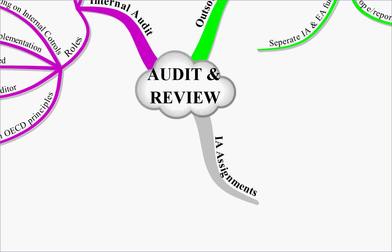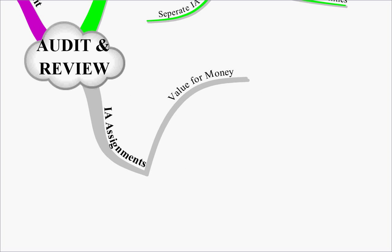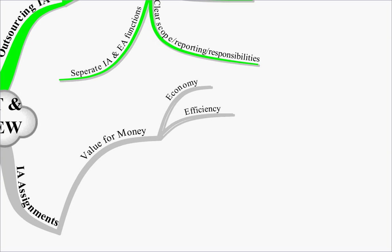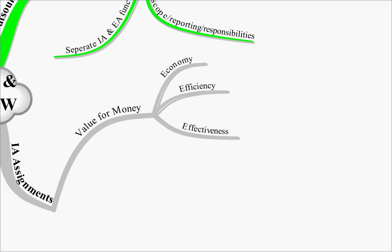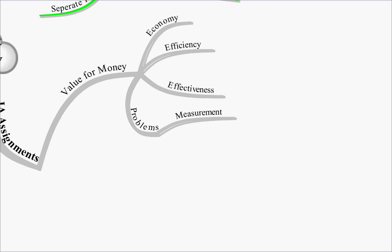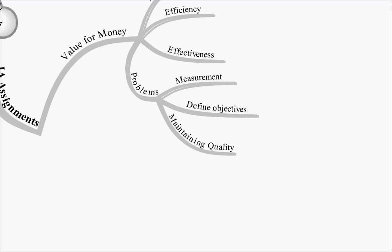Let's look then in a little bit of detail at our internal audit assignments. Well the first one that you'll probably be familiar with from previous studies is value for money audit. This looks at the three E's. Economy, what is something costing us. Efficiency, how well is it being performed. And effectiveness, how valuable or how well are the outputs produced. Problems with this are measurement, how do you measure these three things. How do you define the objectives. And how do you maintain the quality of a value for money audit. So you're looking at the three E's, economy, efficiency, effectiveness. But how do you measure those things, how do you define your objectives, and how do you maintain your quality.